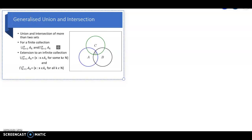Hello students. Today we are going to discuss the concept of generalized union and intersection. In the last class, you found the intersection of three sets A, B, and C, and the union of the same three sets.